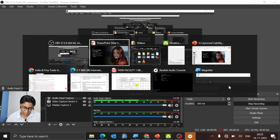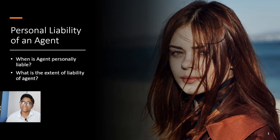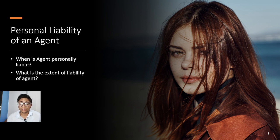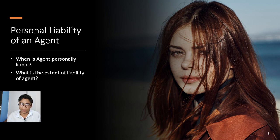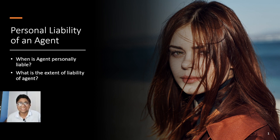So far we have seen how an agency is created and how an agent forms a relationship of agency with the principal. What we haven't studied yet are the different liabilities of an agent as well as the principal. While the principal is liable for everything an agent does on their behalf with third parties, there are certain situations where the agent is also personally liable.